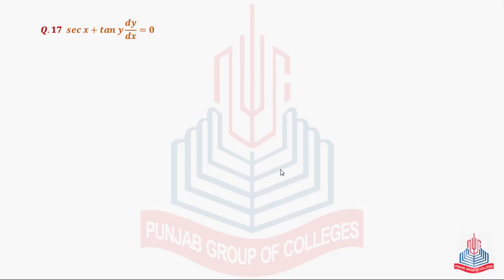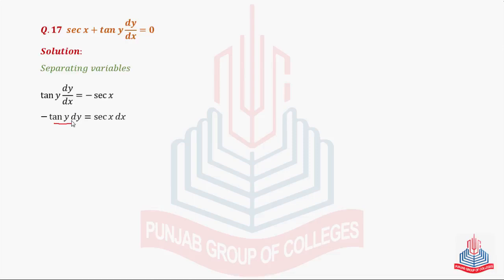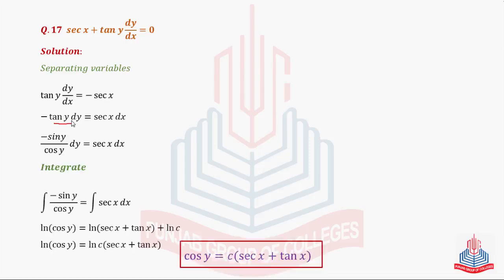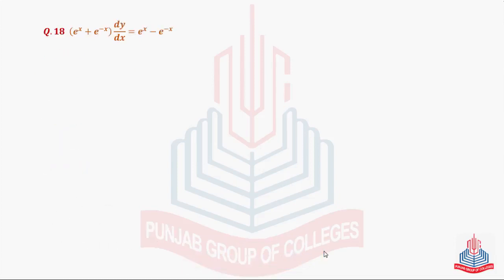Question 17: secant x plus tan y dy/dx — again a very simple question. Hum sabse pehle secant x ko right side par shift karwayenge. Ab aap variables aasaani se separate kar sakte hain: dx cross multiply karwate hue right hand side par, aur tan y dy left hand side par. Humne bilkul yahi question isse previous kiya hai jisme tan y aur secant x tha — bilkul usi pattern par hum iska integration easily kar lenge. That is exactly the same answer as the previous question.